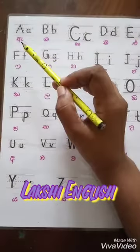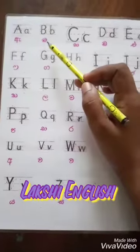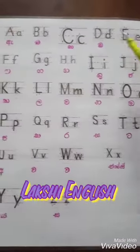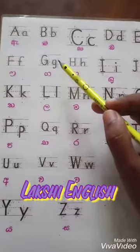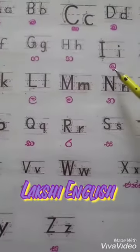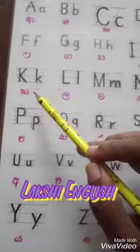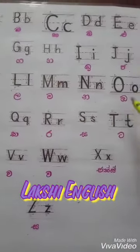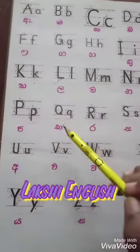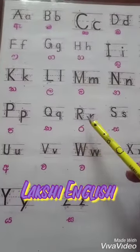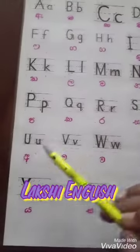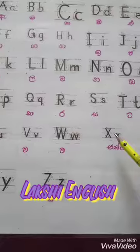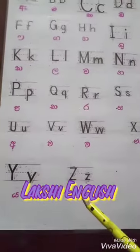The sound — letter A, B, C, D, E, F, G, H, I, J, K, L, M, N, O, P, Q, R, S, T, U, V, W, X, Y, Z.